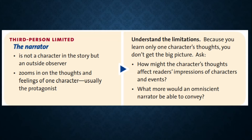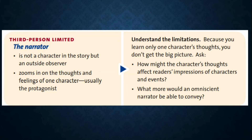Third person omniscient. This narrator is not a character in the story but an outside observer who is all-knowing — he or she has access to the thoughts and feelings of all characters. Take advantage of the insights: when an omniscient narrator tells a story, you become all-knowing too. Ask: how do different characters react to the same event? How do the characters perceive each other?